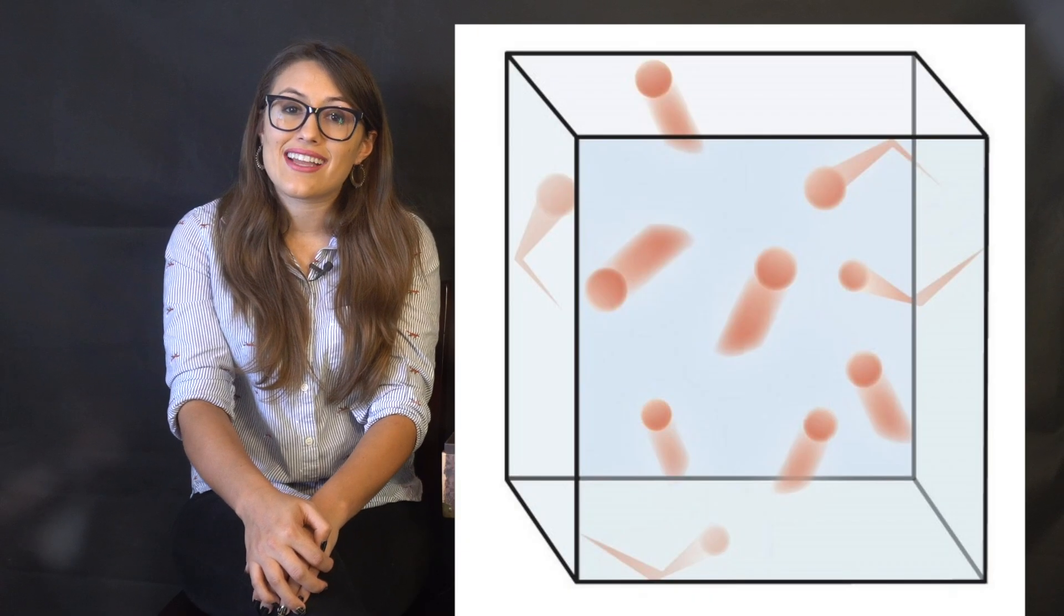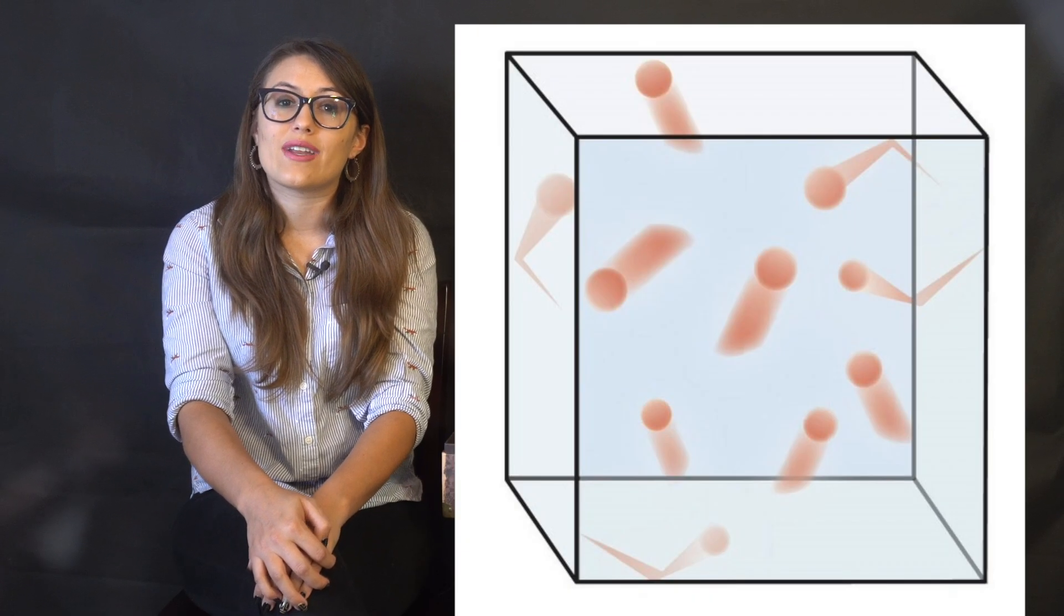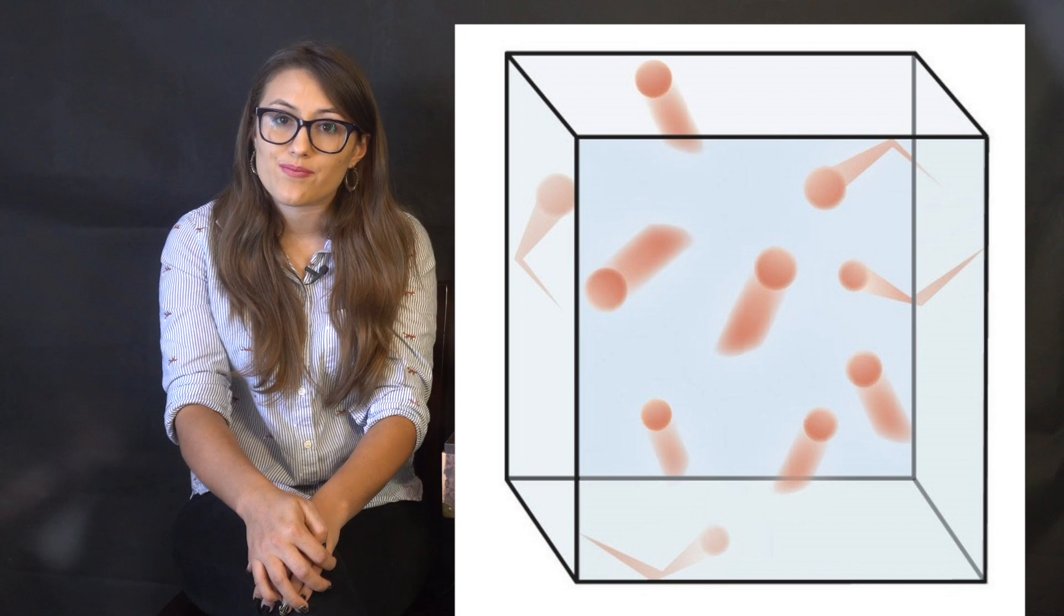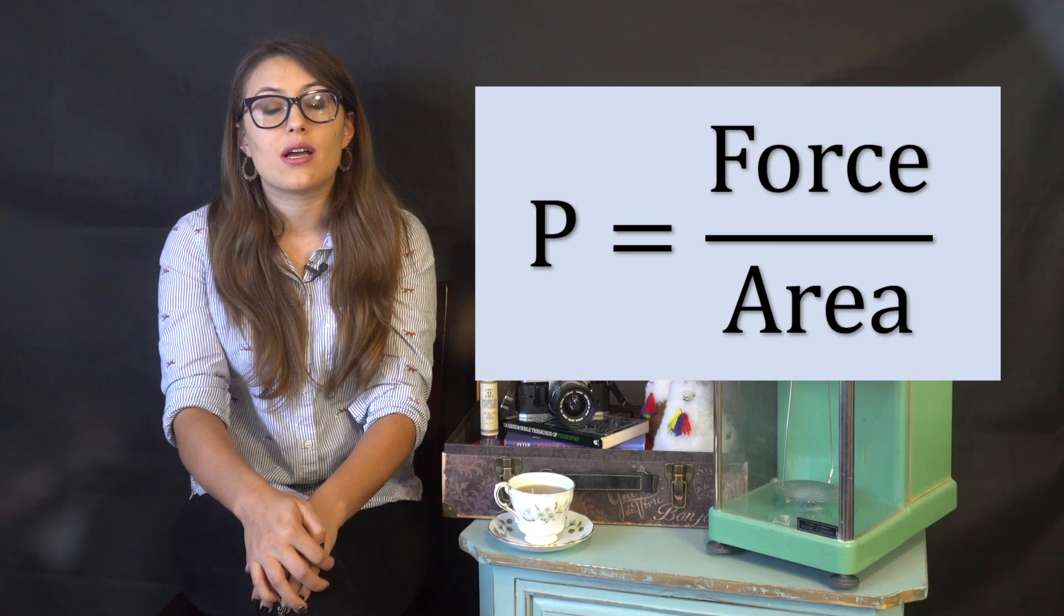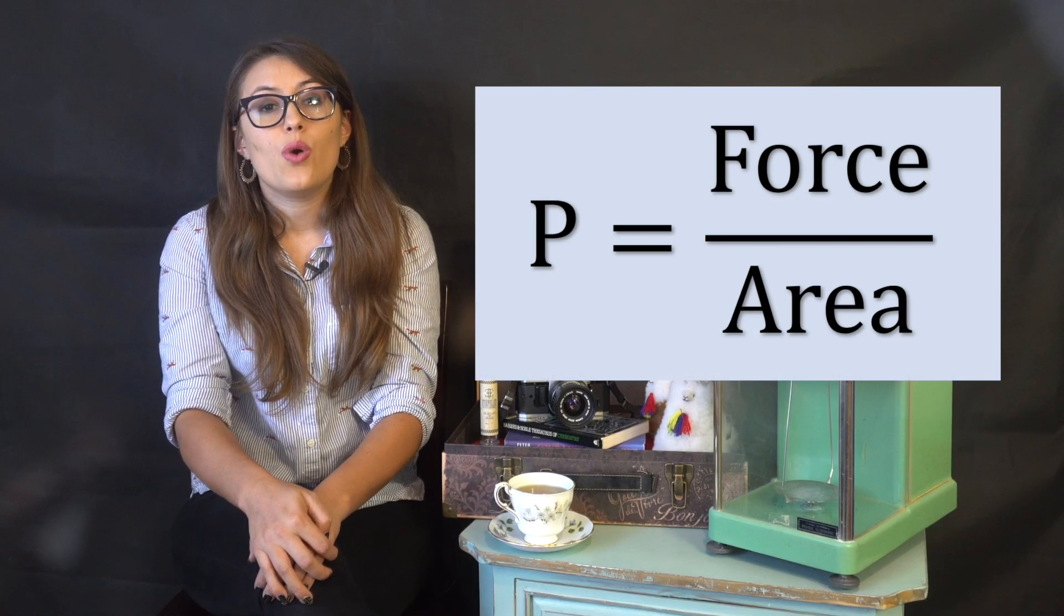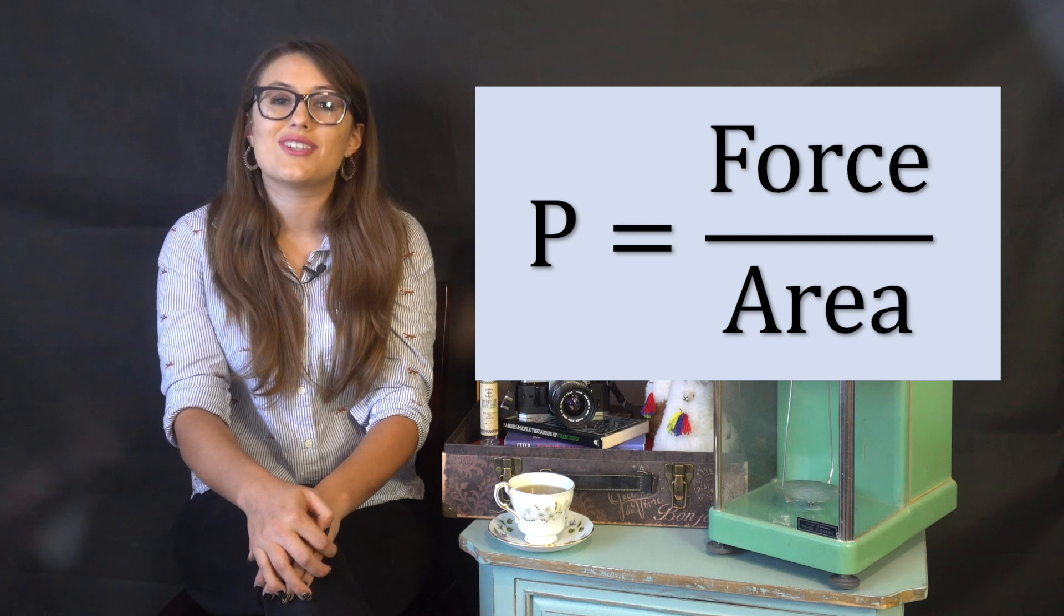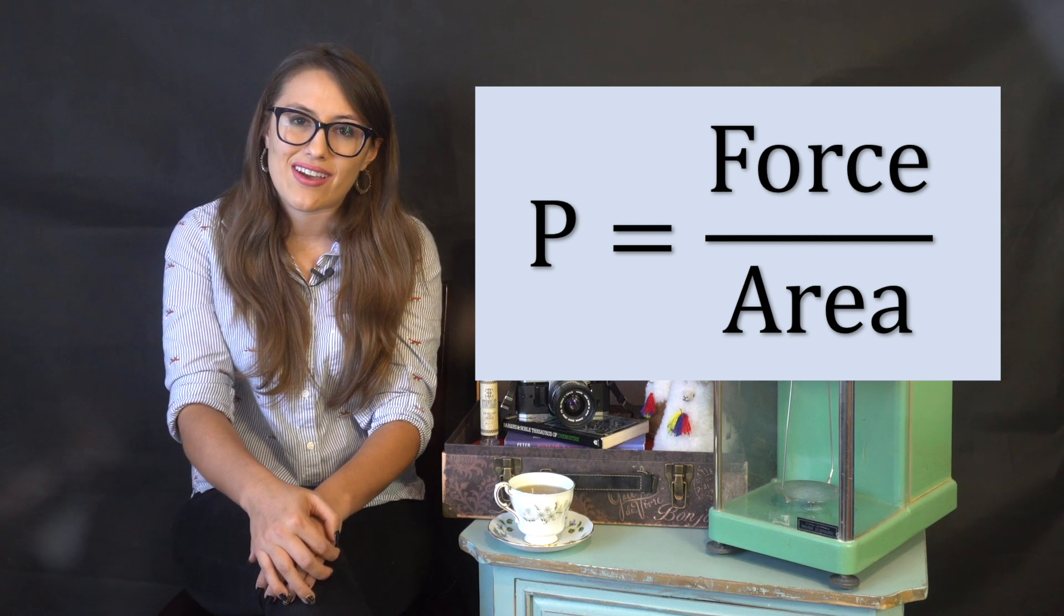When gases collide, they exert a force over a given area, which results in pressure. Pressure is the amount of force applied over an area, which can be seen in the following formula, where pressure is equal to force divided by area.